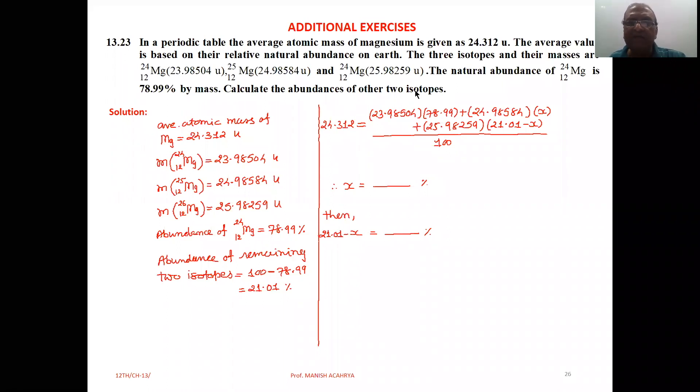Then calculate the abundances of other two isotopes. Now, average atomic mass of mg is given to you, the mass of each isotope is also given to you, and abundance of one isotope 12mg24 that is 78.99% is given to you. It implies that,